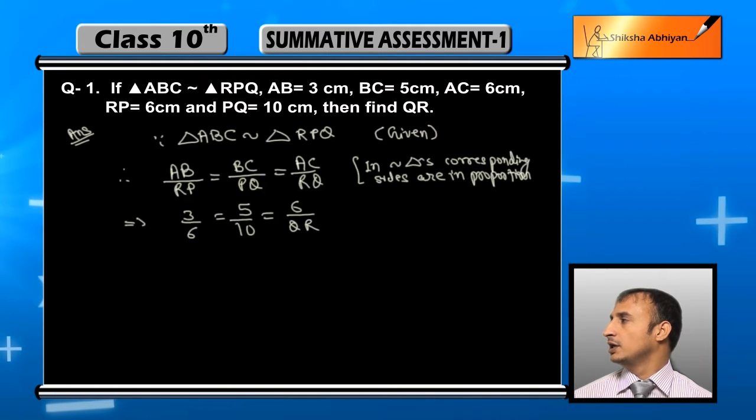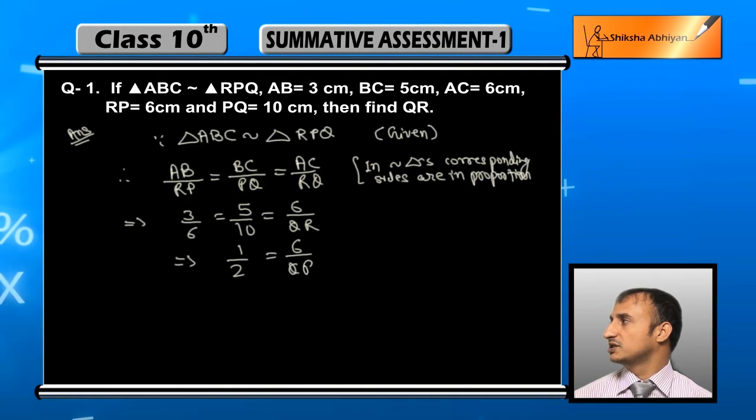AC है 6 and QR यह आपको find out करना है। यह RQ तो आप देख सकते हैं, इस half is equal to 6 upon QR.